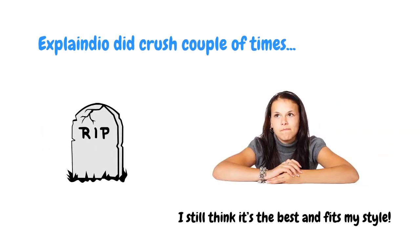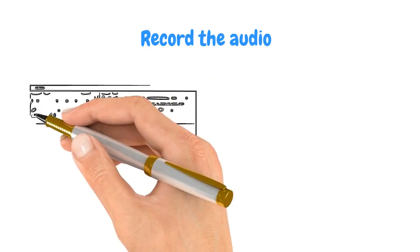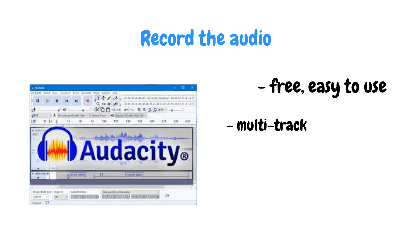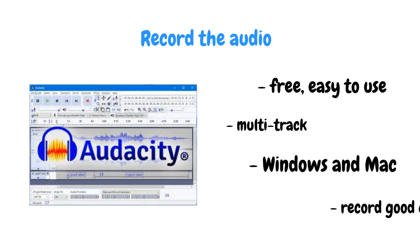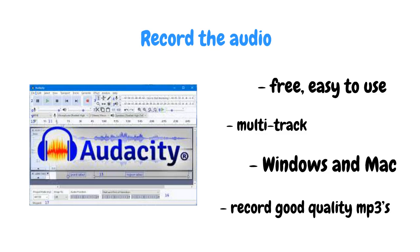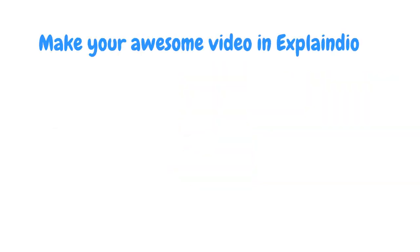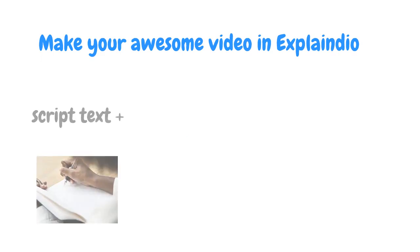Number four: record the audio. I use Audacity for that — it's a free, open-source, cross-platform audio software. Audacity is an easy-to-use multi-track audio editor and recorder for both Windows and Mac. It lets me record good quality MP3s of my voice — like what you're hearing right now. I then add the recording to my Explainedio animation.